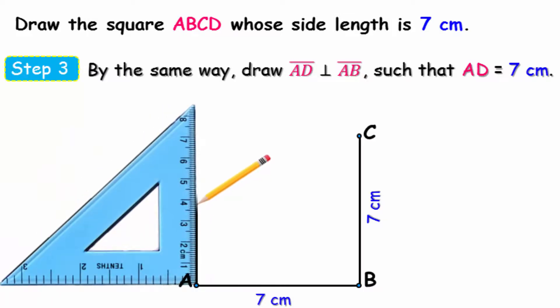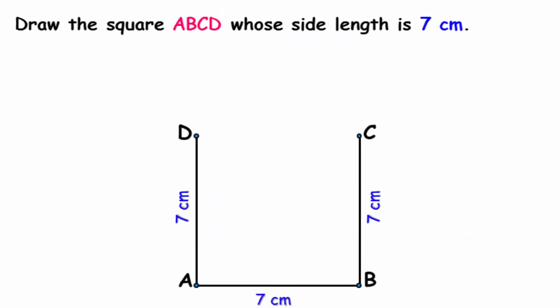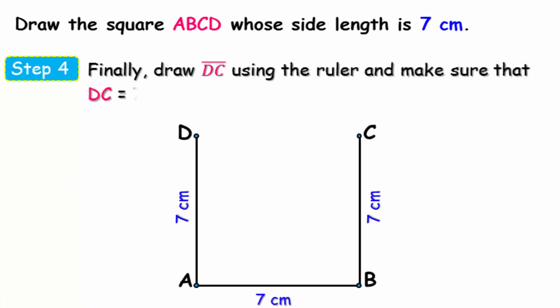As you can see now, don't forget to write the symbols for this straight line. Finally, the last step is that we connect a straight line between points C and D using a ruler and make sure that